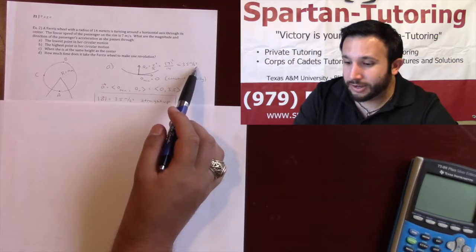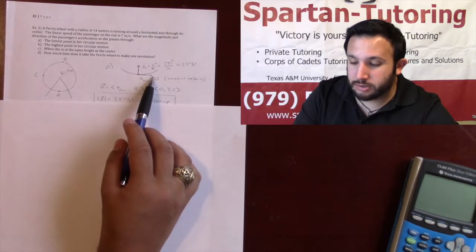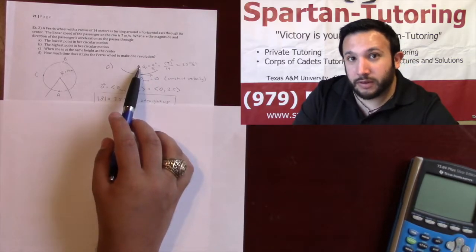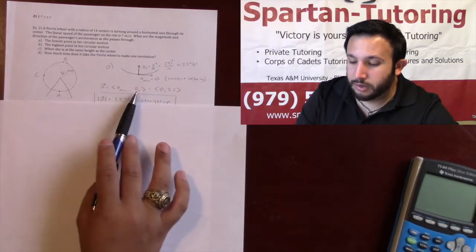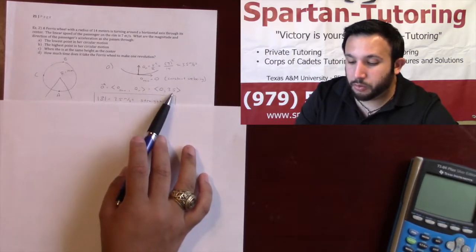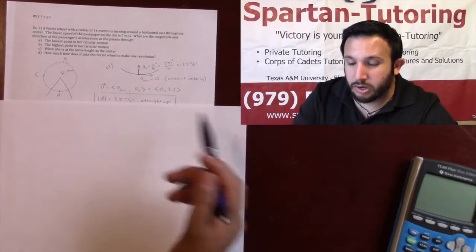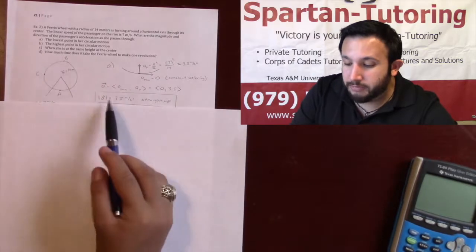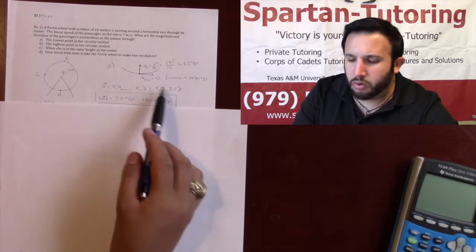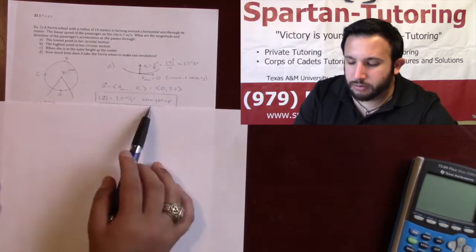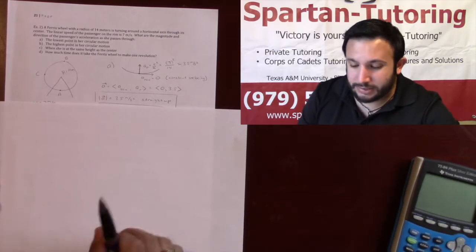Remember, acceleration is a vector. The X component of this vector is your tangential and the Y component is your radial acceleration. So your tangential is 0, and our radial we found to be 3.5. If I want to find the magnitude and direction of her total acceleration, the magnitude is just 3.5 — that's easy because it's all going in the Y direction. And the direction? It's straight up — positive Y direction. That's it.